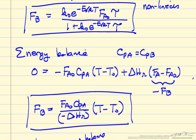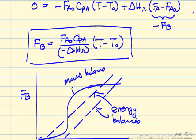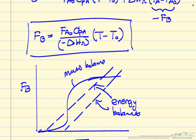The energy balance is just a straight line if we assume constant heat capacities and constant heat of reaction. And so the energy balance could be a line like this that intersects the mass balance at three points, or it could be a line like this that intersects at just one point.